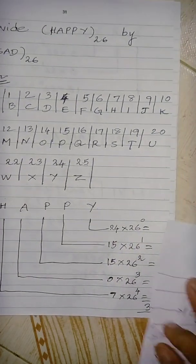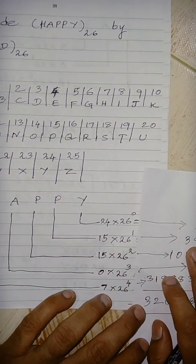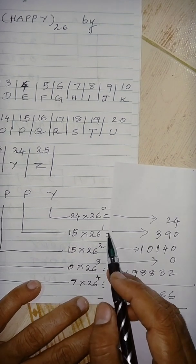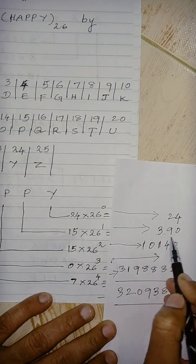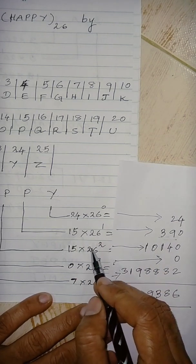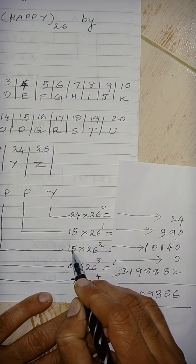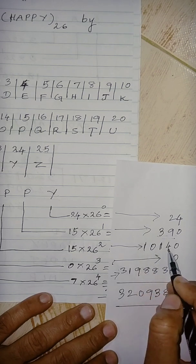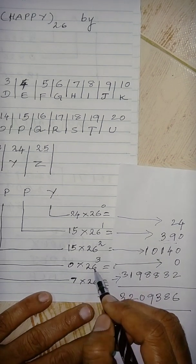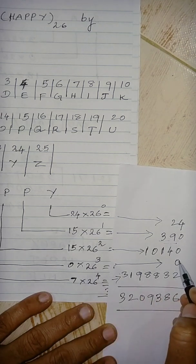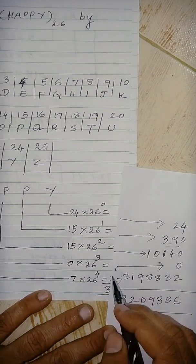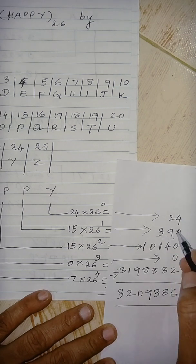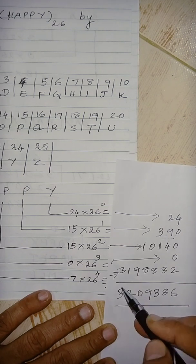Now what is the value we are getting after simplification? 26 power 0 is 1, so we get 24. Then 26 into 15 gives 390. Next, 26 squared multiplied by 15 gives 10140. Then 0 into 26 power 3 gives 0. And 7 into 26 power 4: 26 power 4 multiplied by 7 gives 3,198,832. Adding all: the total is 3,209,386.